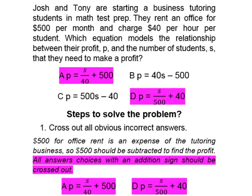The answer choices we have left are B, which is P is equal to 40S minus 500, and also C, P is equal to 500S minus 40.